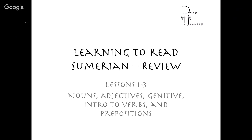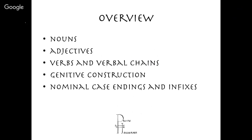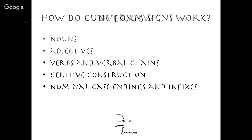You'll be able to say, 'Nope — dingir is one sign, and the reason there's an ng sound in there is because there's a nasalized G, not because there are two different signs.' Any questions you have, throw them in the side chat. Megan, my wife, is watching and will alert me if I miss something. Today we're going to look at nouns, adjectives, verbs and verbal chains, the genitive construction — basically how you put two words together using 'of' — and nominal case endings and their infixes, which is basically how they use prepositions.